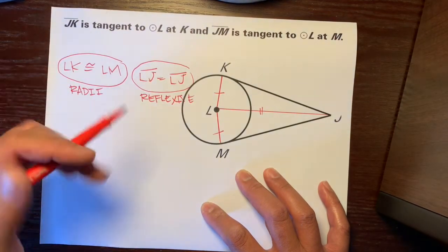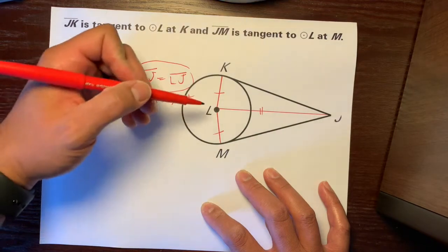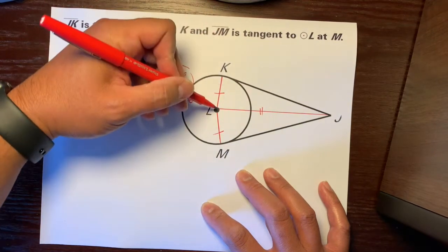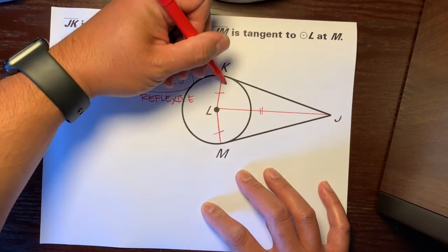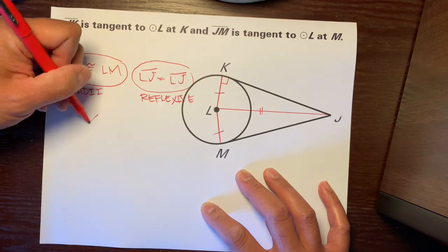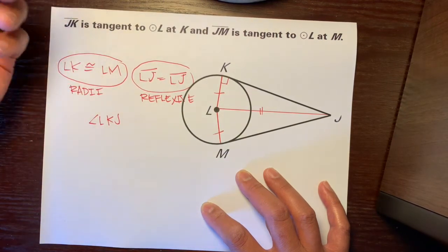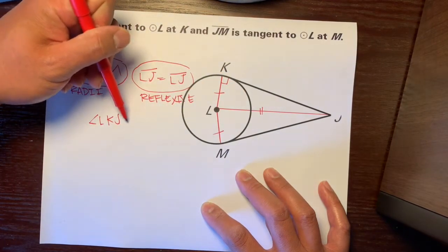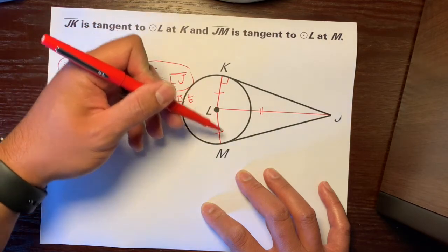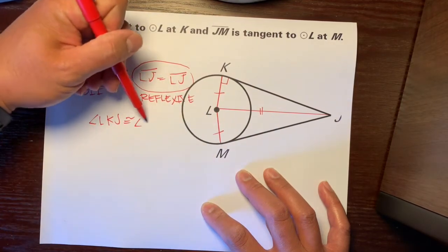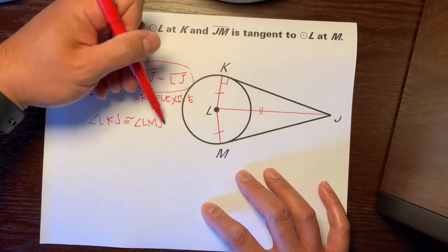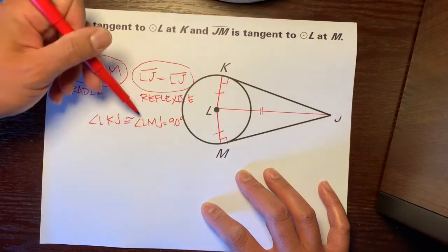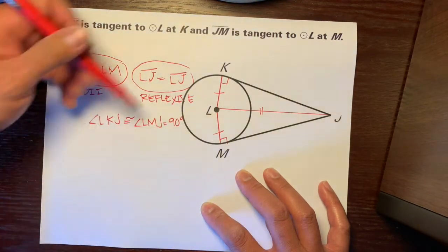Next thing is, we can say that angle LKJ, so this angle, I'm going to put this bubble here, angle LKJ. And hopefully, you guys are following along, and you guys are writing this in your notes also, so you know this for life. So, angle LKJ is congruent to angle LMJ, which equals 90 degrees. So, they are congruent to each other, because they both equal 90 degrees.